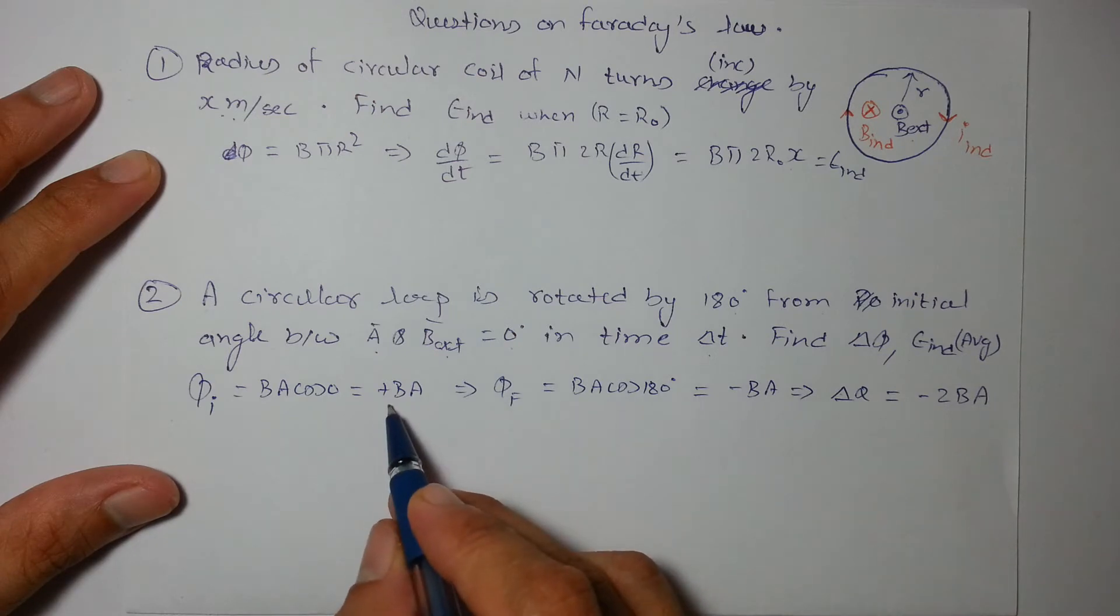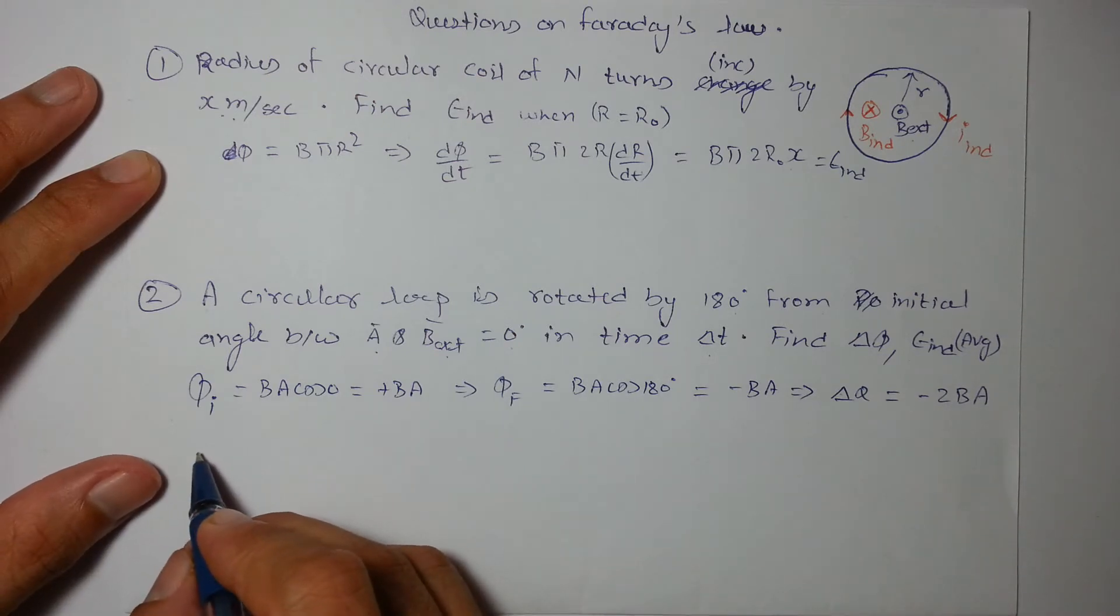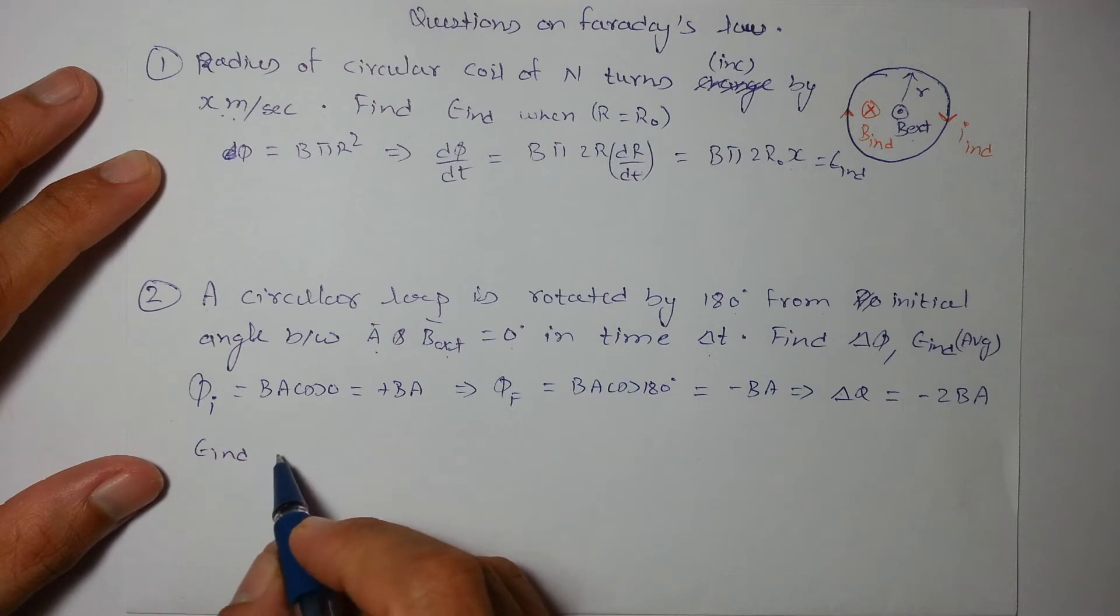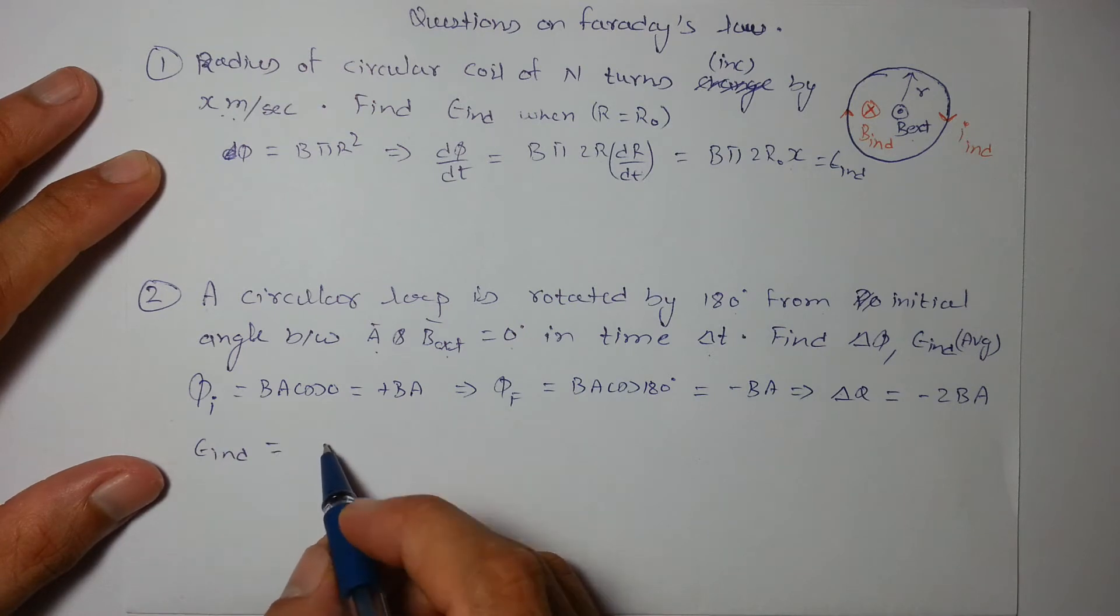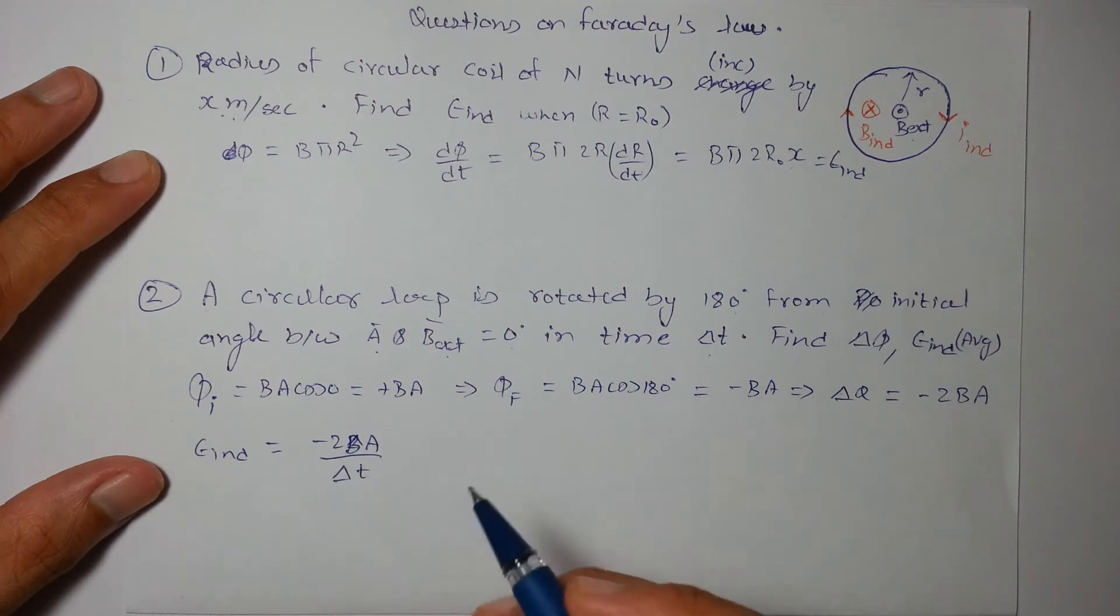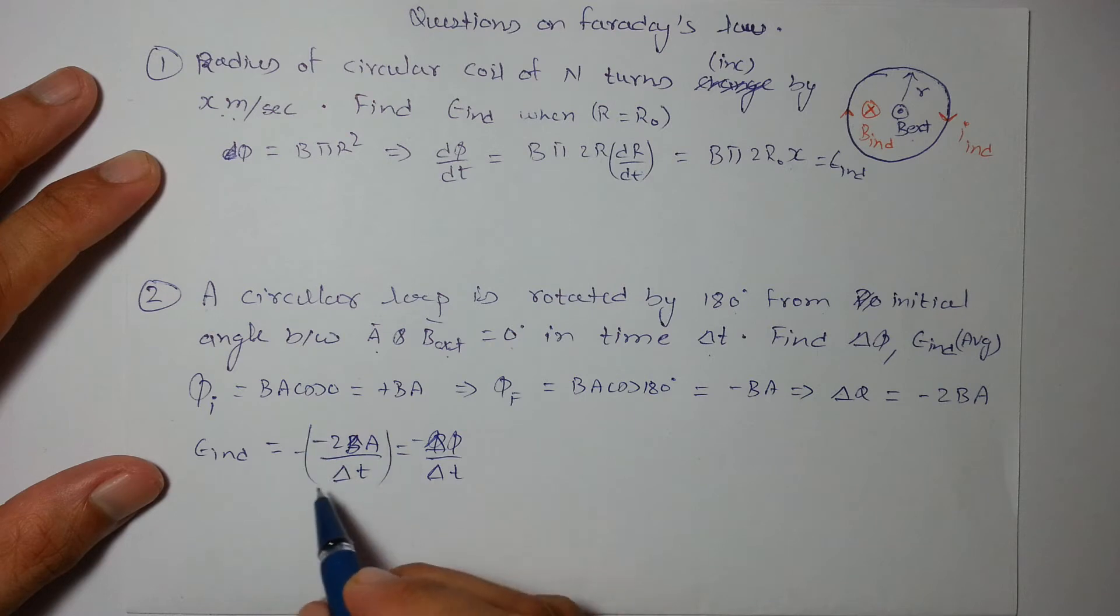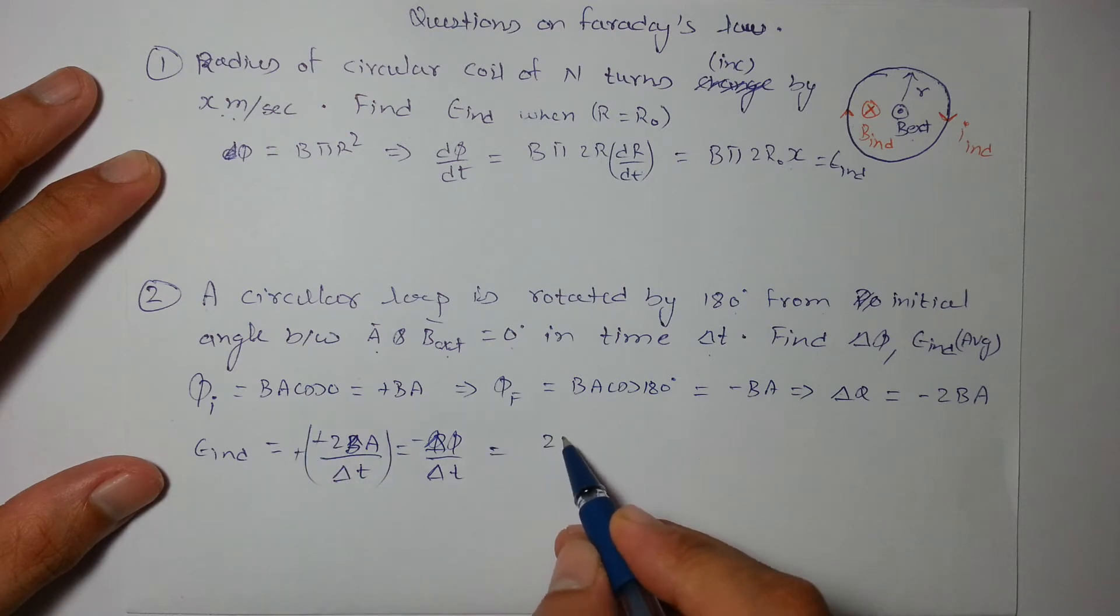This minus this will be minus 2BA and the EMF induced will be minus 2BA by delta t which is by definition minus delta phi by delta t. So this negative sign will be taken care of so the EMF induced will be 2BA by delta t. That will be the answer.